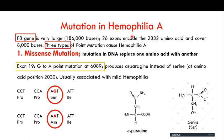Three kinds of mutations occur in the F8 gene that lead to the formation of an abnormal Factor 8. All three are point mutations — meaning there is a change in only a single base pair — and these changes are responsible for causing hemophilia. The first type is known as the missense mutation.